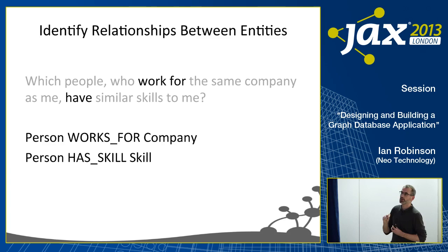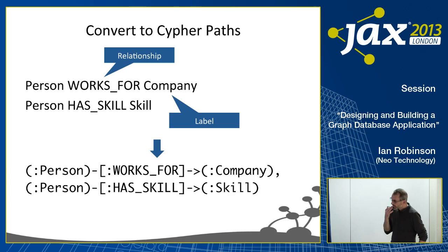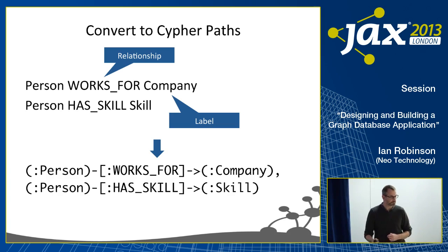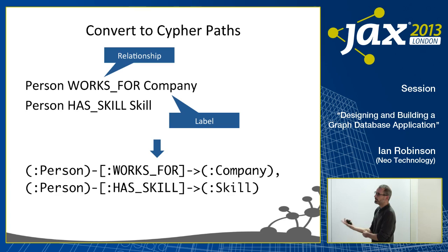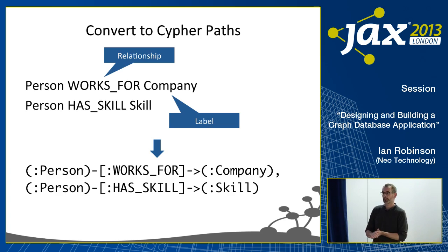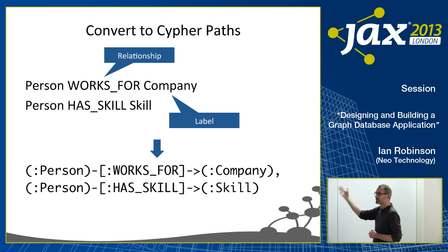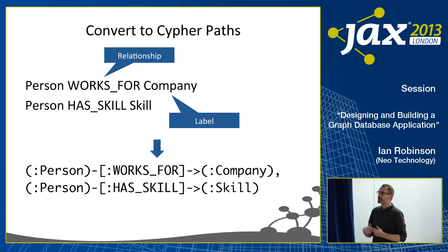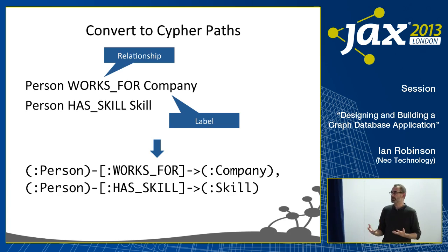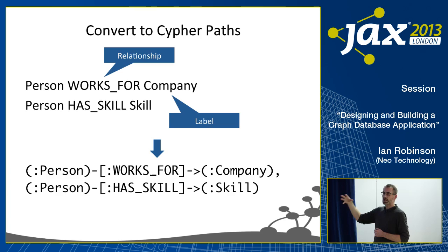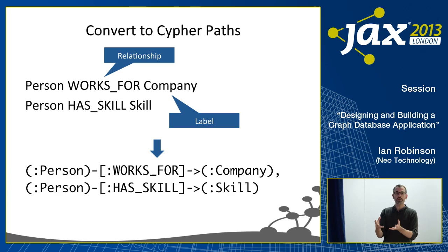So I've got two very simple expressions: a person works for a company, and a person has a skill. What I'd then do is convert these into what we call Cypher paths. Cypher is Neo4j's query language — much as SQL is a query language for a relational database, Cypher is a query language for the labeled property graph model. It's a multi-clause language, and once you've been working with it for half an hour it begins to feel very familiar — it's quite SQL-like but more oriented towards identifying and matching patterns within graphs.